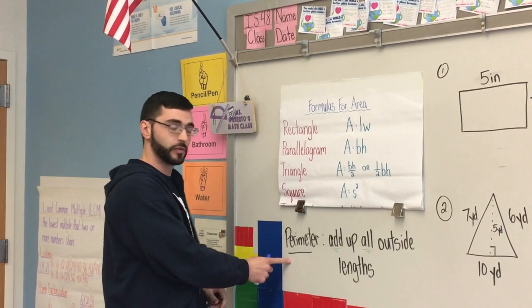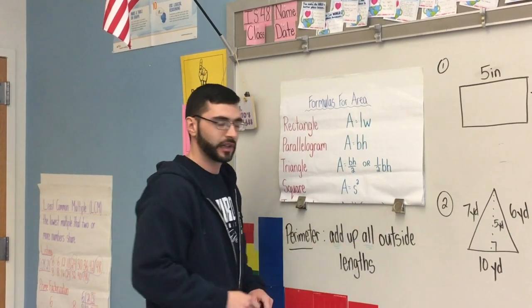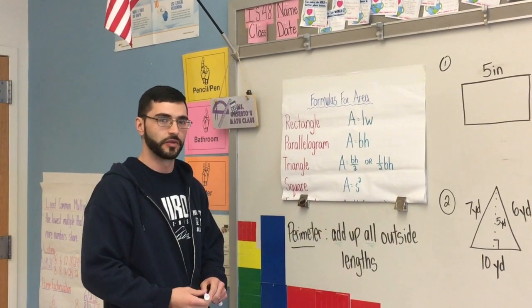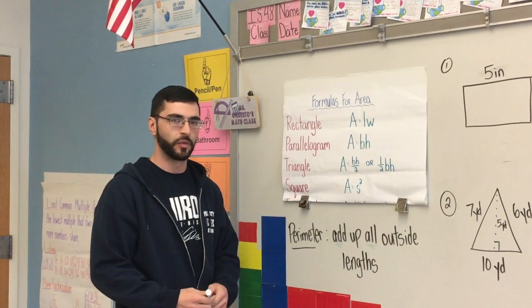Also, we're going to be solving for perimeter. Perimeter, that's when we add up all the outside lengths. So that's the only one we're going to be using addition for. Every outside length, we're adding up for that one final answer.